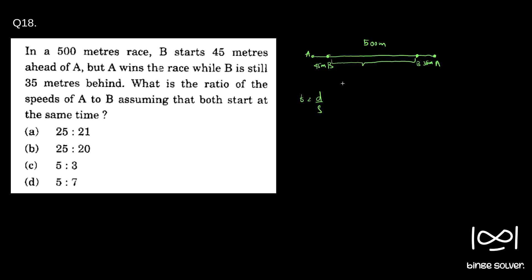Which is 500 minus 45 minus 35. So this distance is, if you add 45 and 35, we get 80. So 500 minus 80 equals 420. This distance is 420.